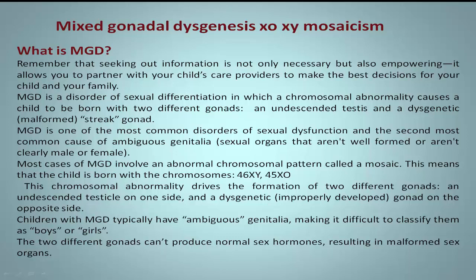MGD is a disorder of sexual differentiation in which a chromosomal abnormality causes a child to be born with two different gonads: an undescended testis and a dysgenetic streak gonad.